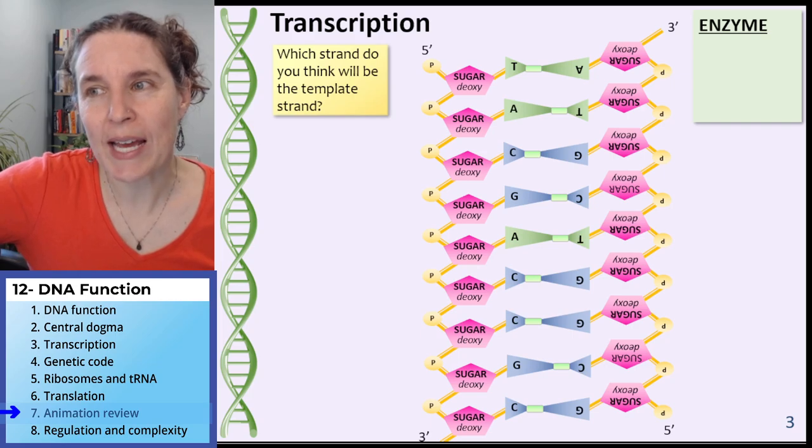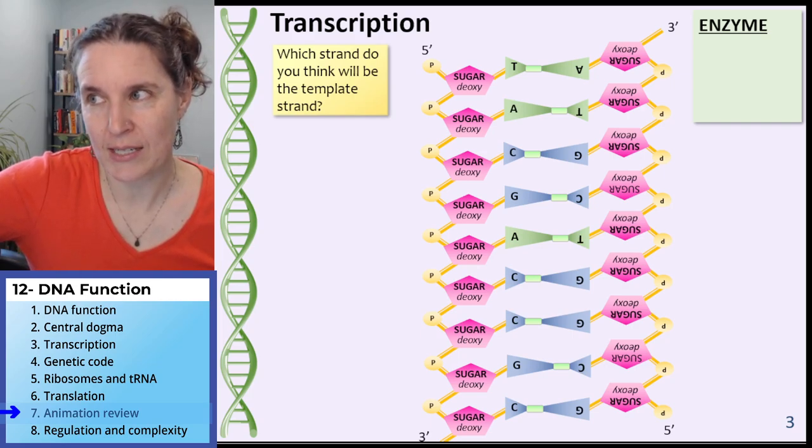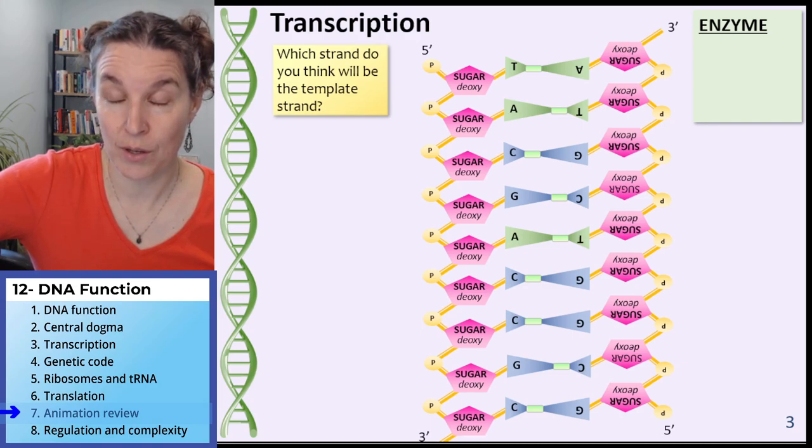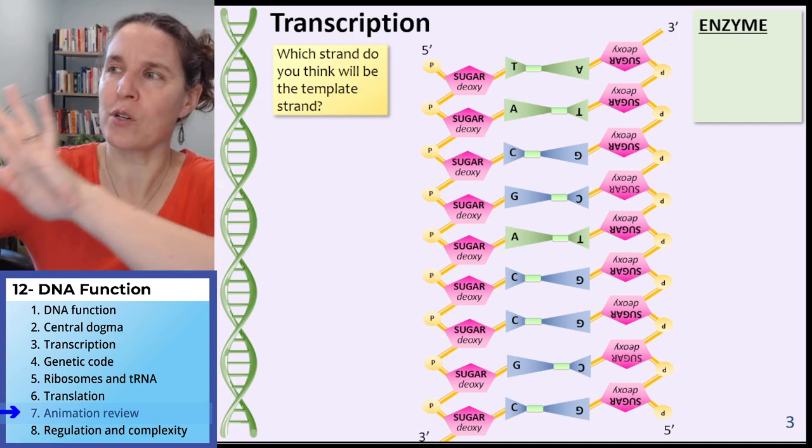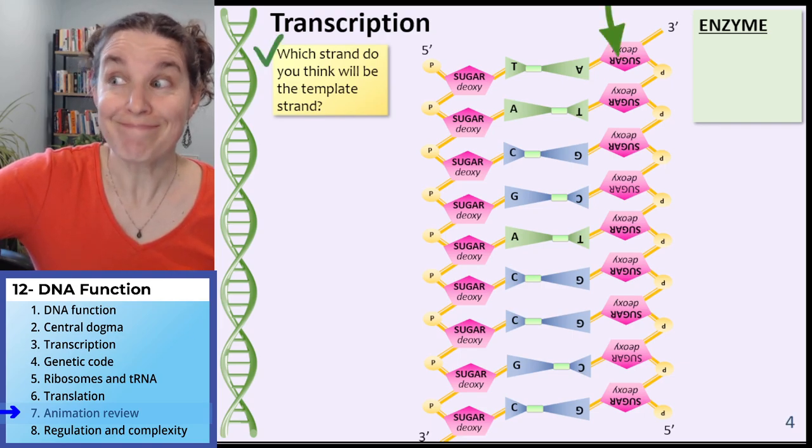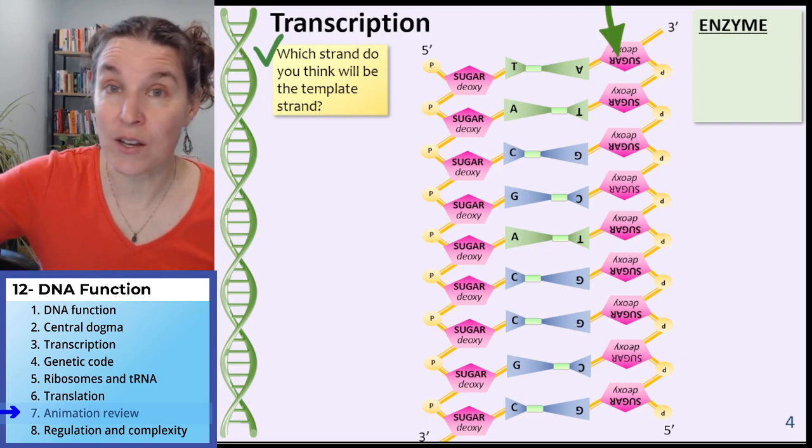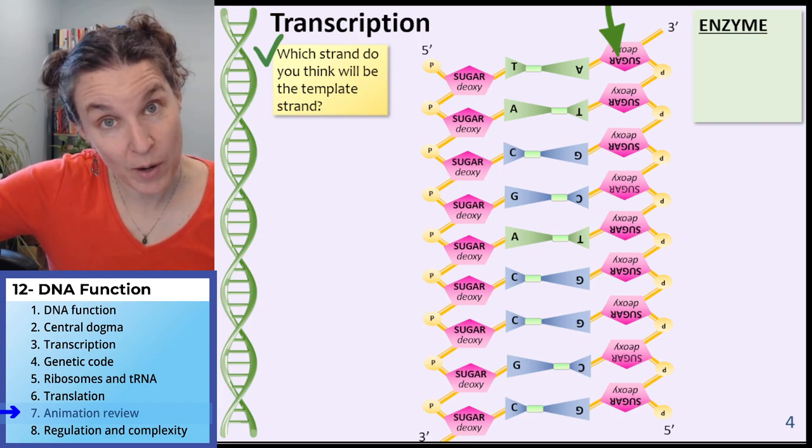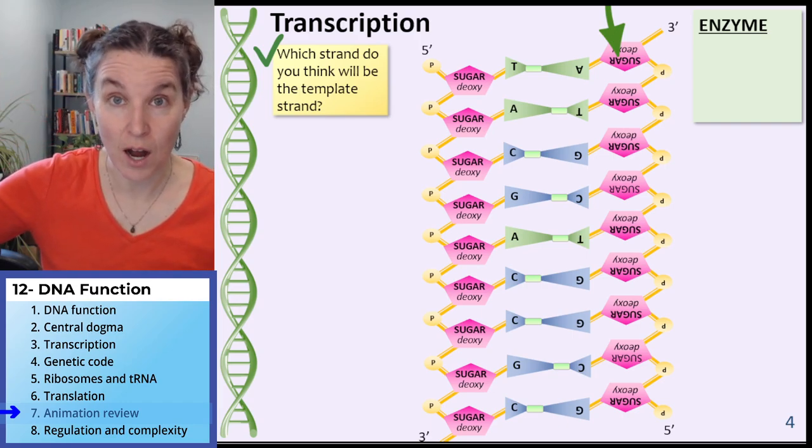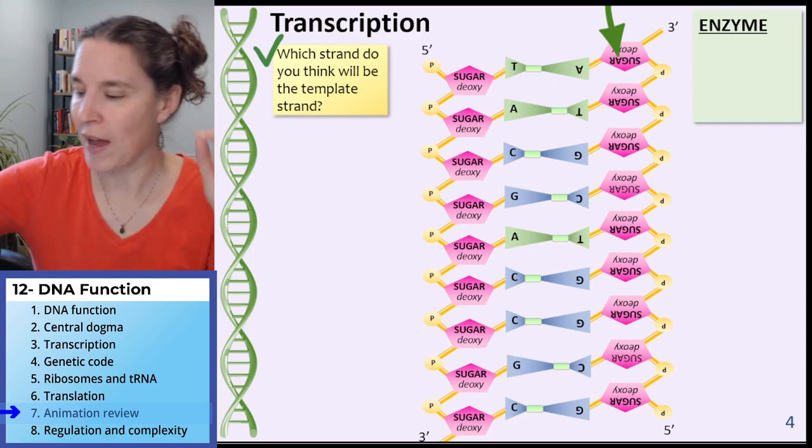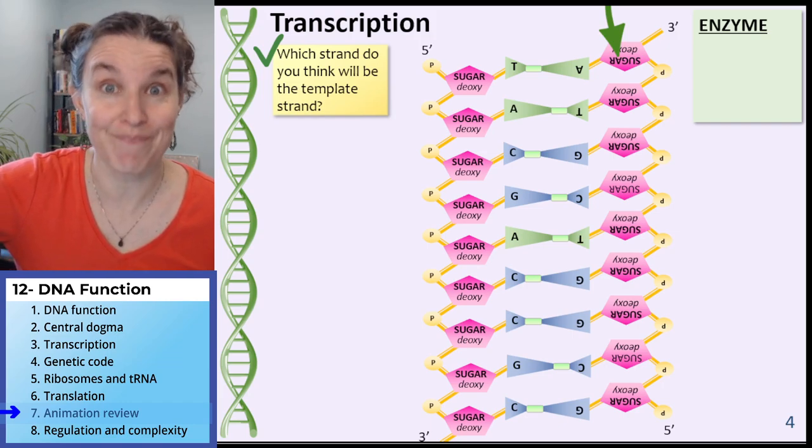Which strand do you think will be the template strand if I'm telling you that we're going to code downward? The strand on the left or the strand on the right? It's going to be the strand on the right because that strand is 3 prime to 5 prime. And that means that our RNA polymerase can build a new molecule in the 5 prime to 3 prime direction.